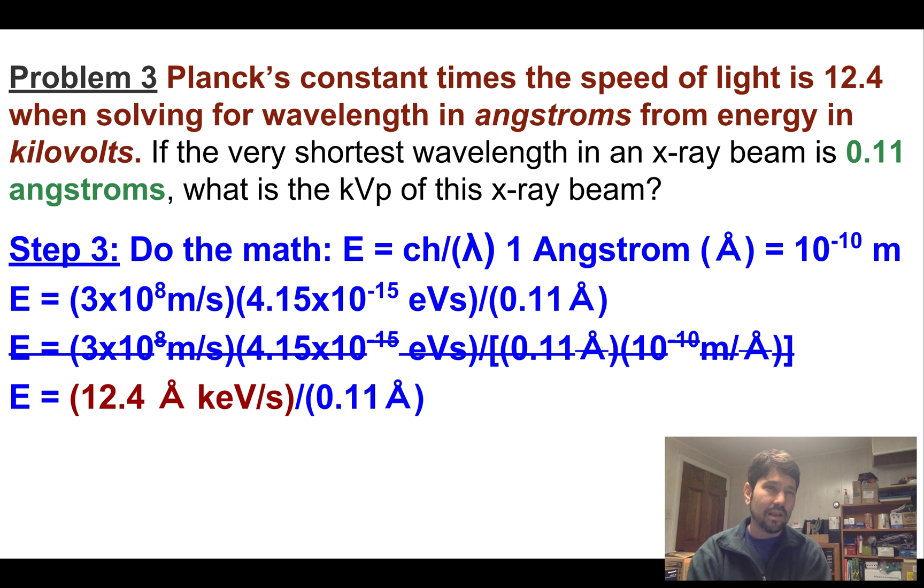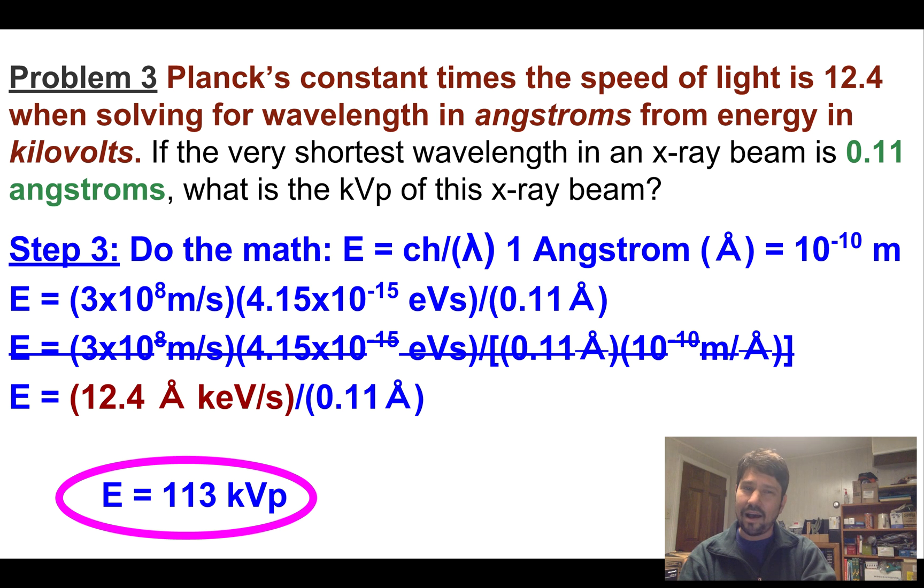Planck's constant times the speed of light is 12.4 when you're solving for wavelength in angstroms from energy in kilovolts. That means they've already done it. They've said 12.4 angstrom kilovolts per second is our whole numerator. And we'll just divide that by 0.11 angstroms. So they set it up so we didn't have to know what an angstrom is. We didn't have to convert electron volts to kiloelectron volts or angstroms to meters. They set it up so we wouldn't have to do the unit conversions. So like I said, that first sentence looks scary, but it actually took care of a lot of the unit conversions for us. And boom, 113 kVp is our answer. Circle it, make it obvious.